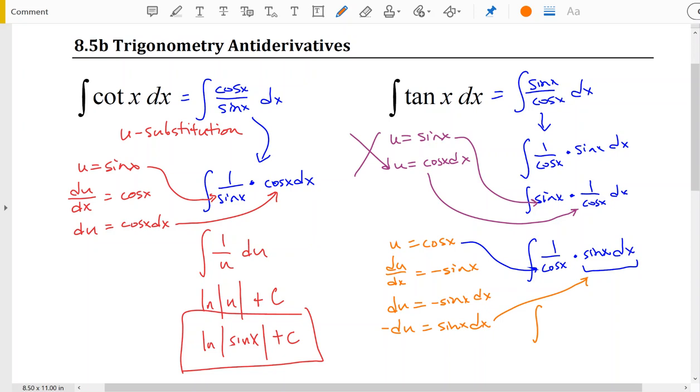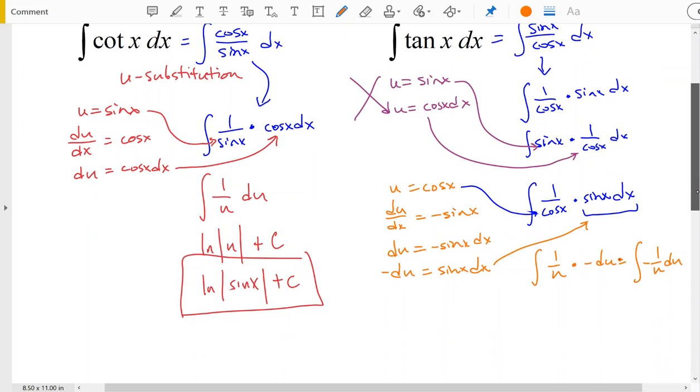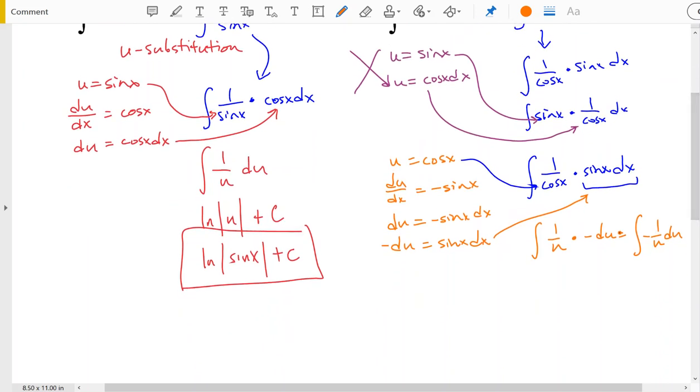Giving us the antiderivative of 1 over u times negative du. And it would probably be easier if we just rewrite that as negative 1 over u du. Well we just saw that antiderivative in the previous problem. The antiderivative of 1 over u is natural log.